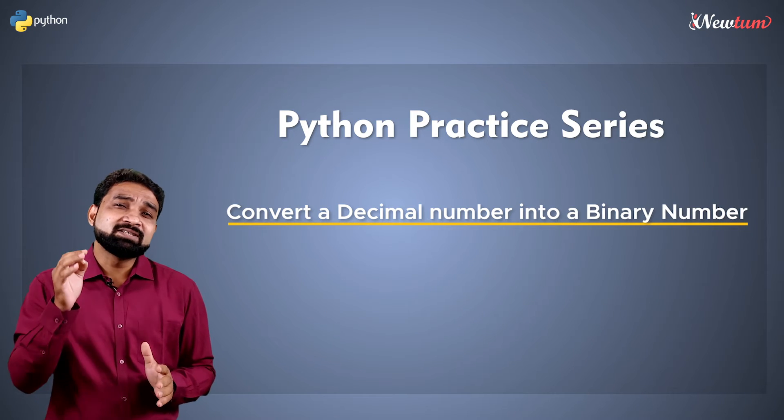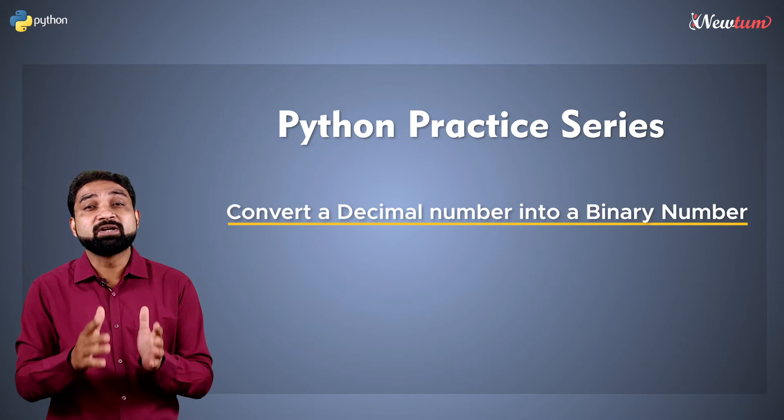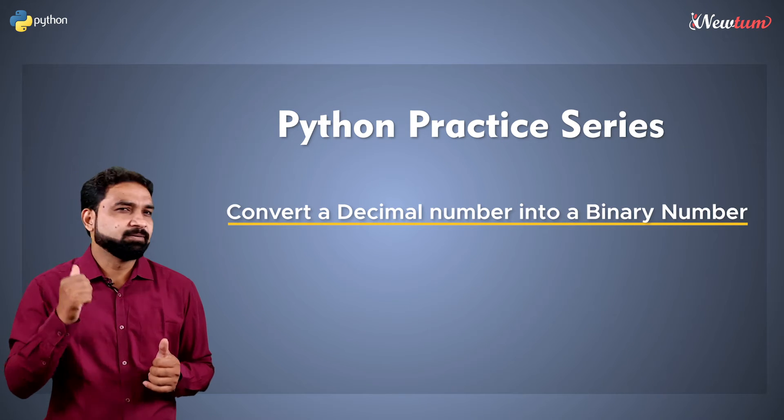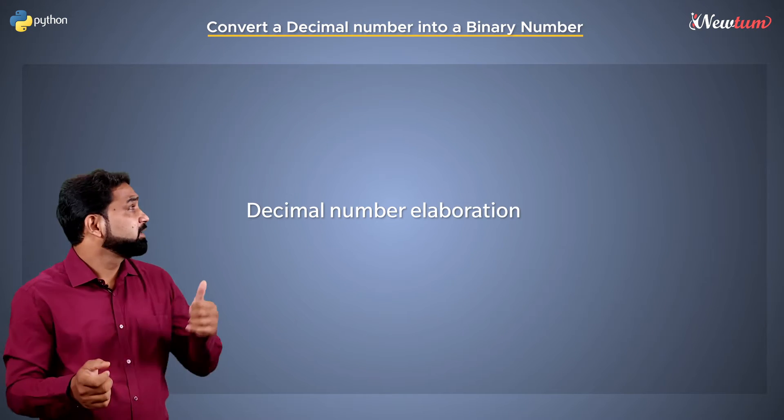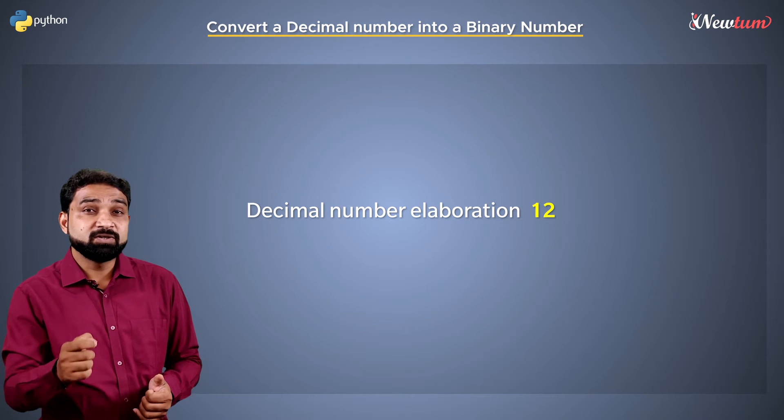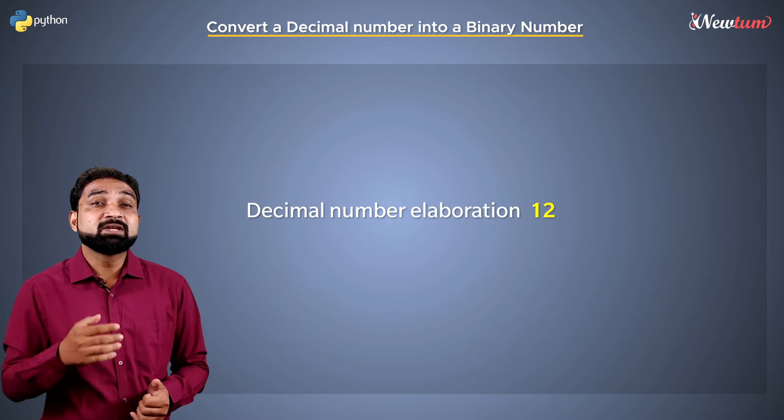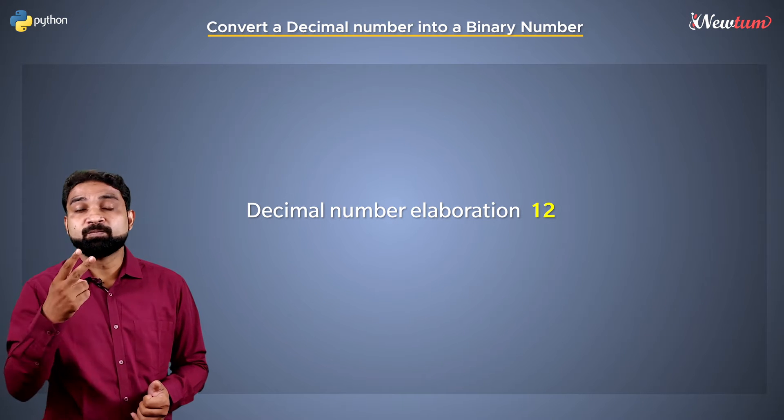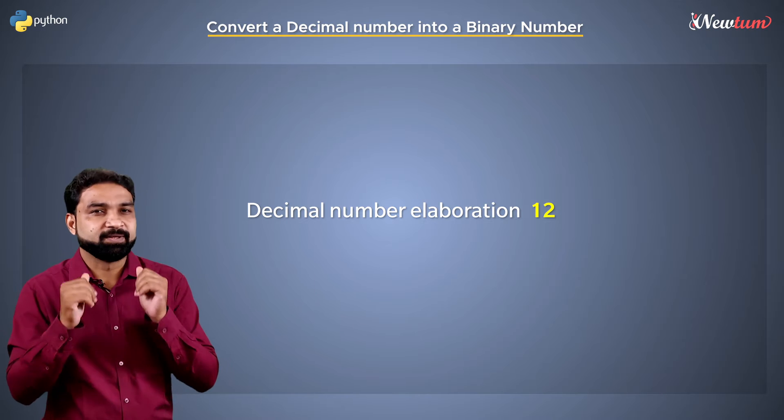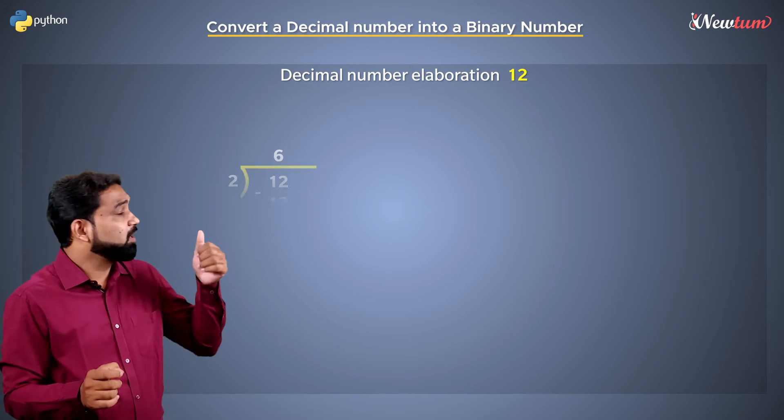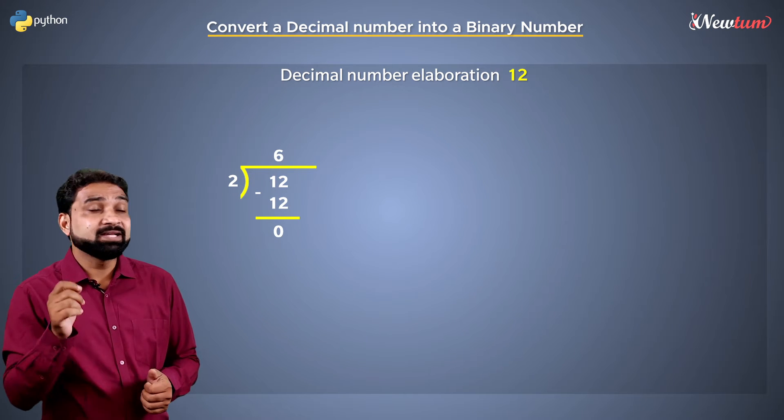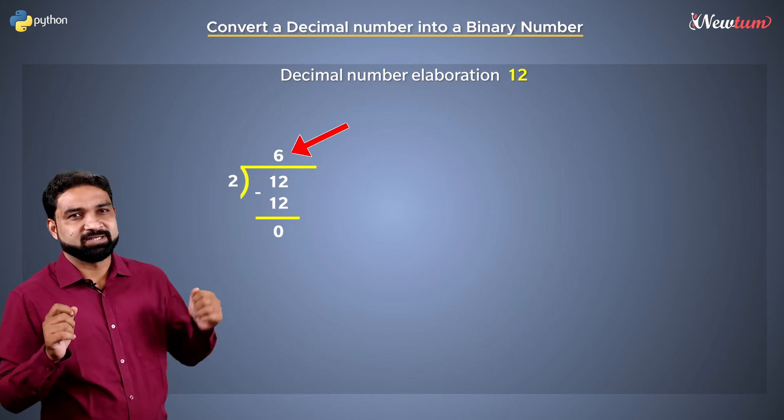So let's understand the logic of converting a decimal into binary number. Suppose you have a decimal number 12. To convert this into binary, you will keep on dividing the number by 2 till it is greater than 1. When you divide 12 by 2, we get remainder as 0 and the quotient as 6.